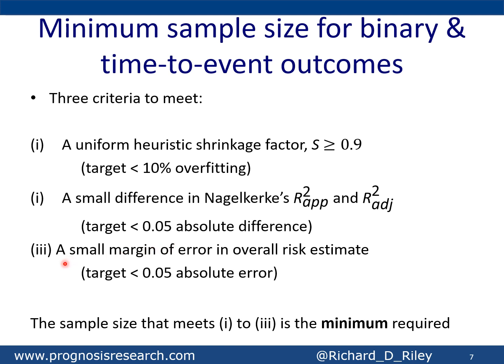Thirdly, we want to make sure the intercept is estimated precisely — so let's make sure that the overall risk, i.e. the average risk in the population, is estimated precisely. The confidence interval for the absolute risk should have a width of no bigger than 0.1, so an absolute error of 0.05. These are our minimum criteria, and the sample size needed to achieve all three is the minimum required. We could go beyond this and also look at the sample size needed to estimate each predictor effect precisely, but this is the bare minimum.